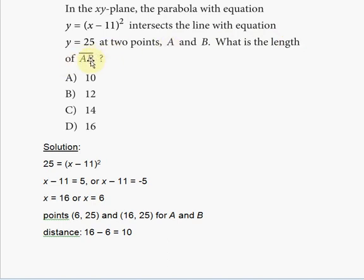So the first thing that you should do is set y equal. And why do you set it equal? Because it says intersects the line with equation. So two equations intersect, so that means you can set these two values for y equal. So you're going to have 25 is equal to x minus 11, and you're going to square that.